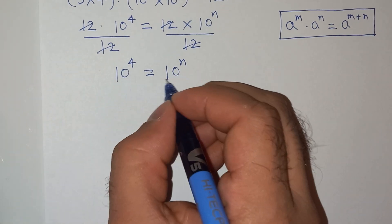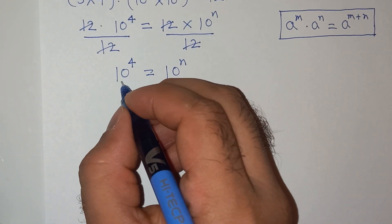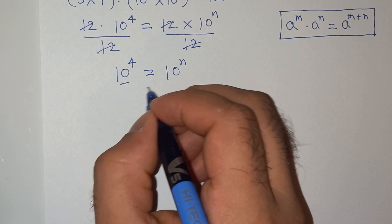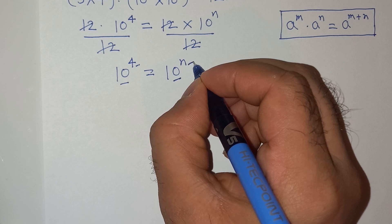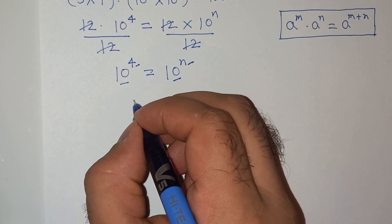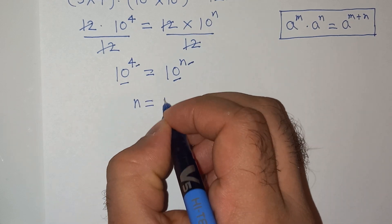Now we can compare left hand side and right hand side. The base on left side is 10 and right side is also 10, so the exponent should also be equal. So we can say that the value of n is equal to 4.